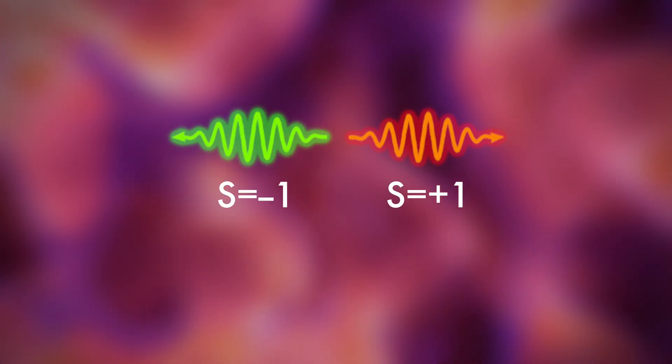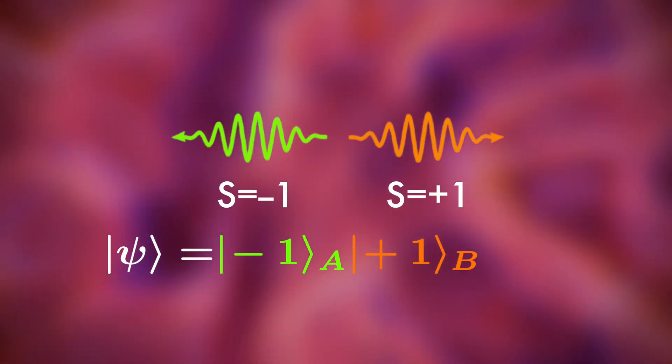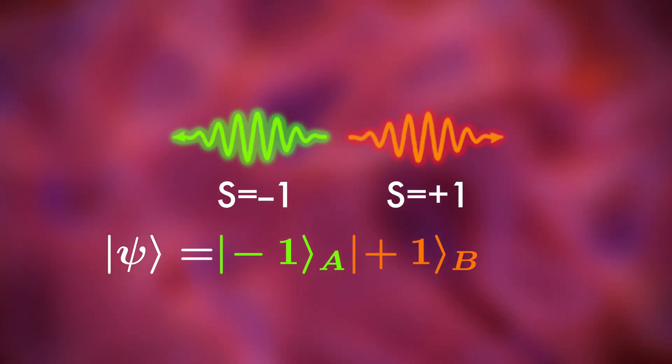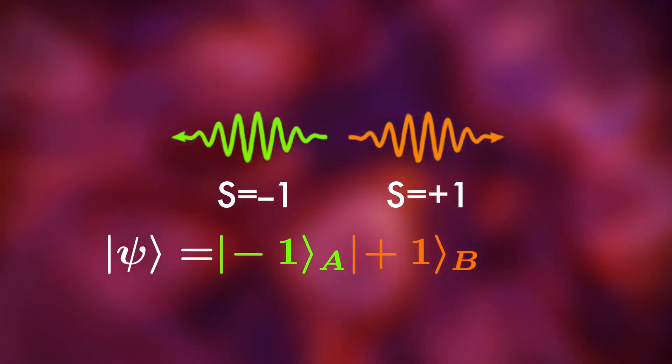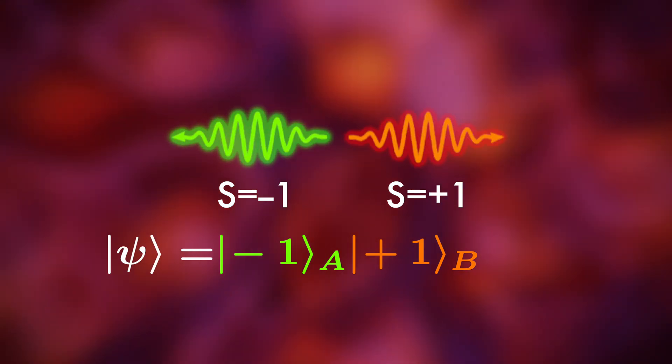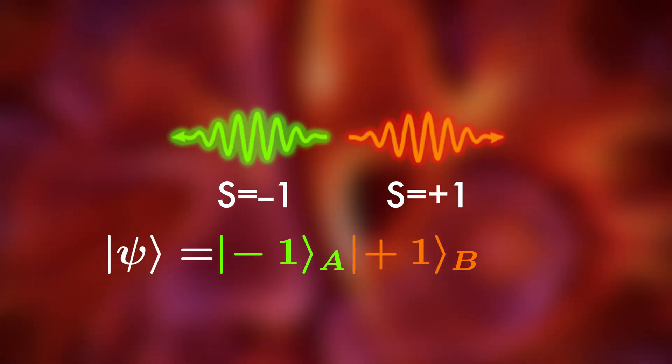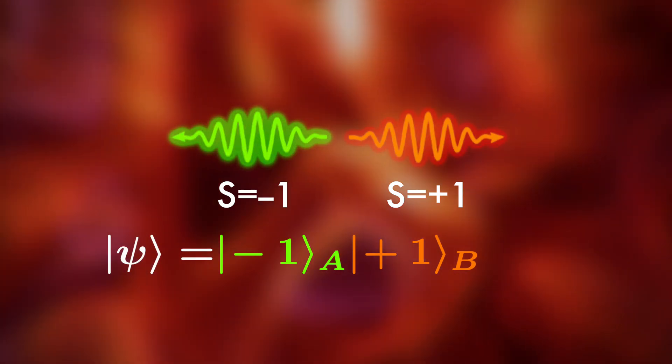But it is completely random which photon ends up with which spin exactly. We can write down the spin of each photon like this. This is just a description commonly used in quantum mechanics. What any normal person would expect is that one photon with spin plus one and one photon with spin minus one would be randomly created. But this is not quite what happens.